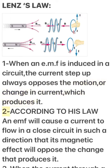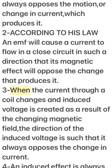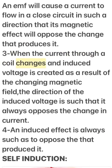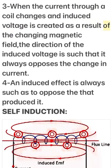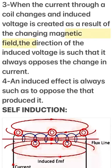Lenz's Law — Point 2: According to this law, an EMF will cause a current to flow in a closed circuit in such a direction that its magnetic effect will oppose the change that produces it. Point 3: When the current through a coil changes, an induced voltage is created as a result of the changing magnetic field. The direction of the induced voltage is such that it always opposes the change in current.